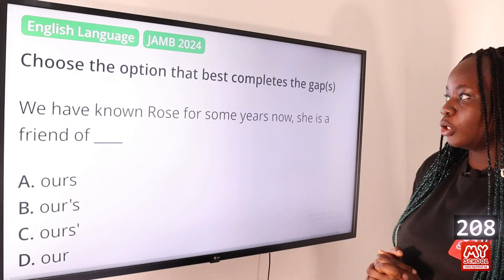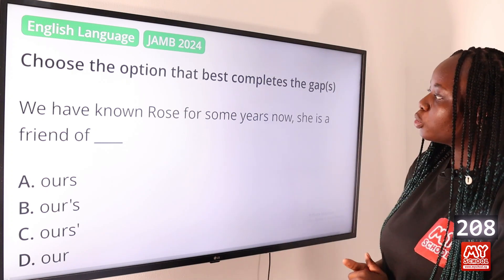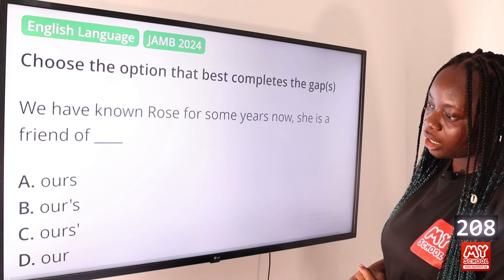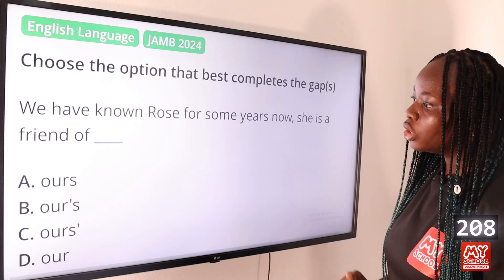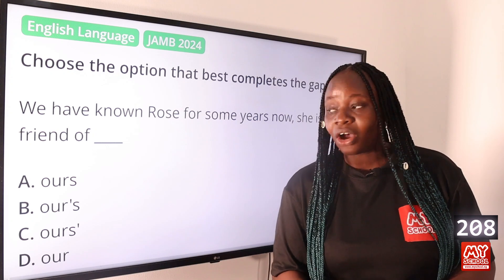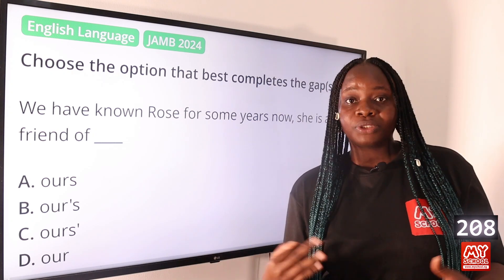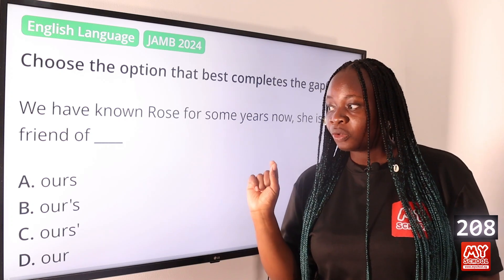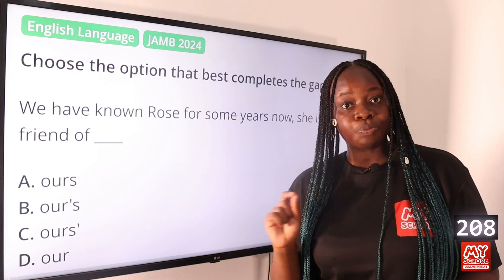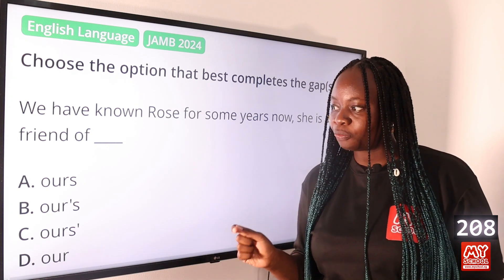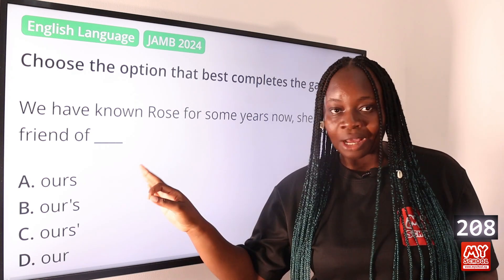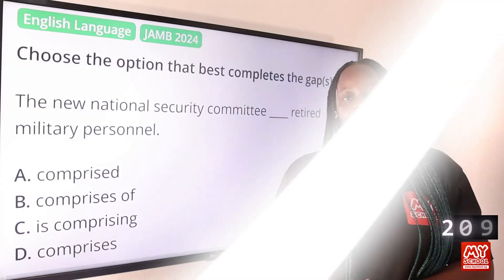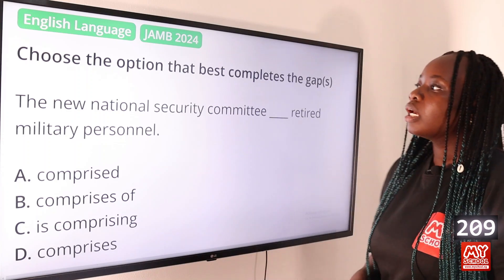Question 208: Choose the option that best completes the gap: 'We have known Rose for some years now; she is a friend of dash.' Option A: ours, B: our's, C: our's, D: our's. The answer is option A, ours. This is the proper possessive pronoun to use. Possessive pronouns do not come with an apostrophe, so you choose 'ours' without an apostrophe.